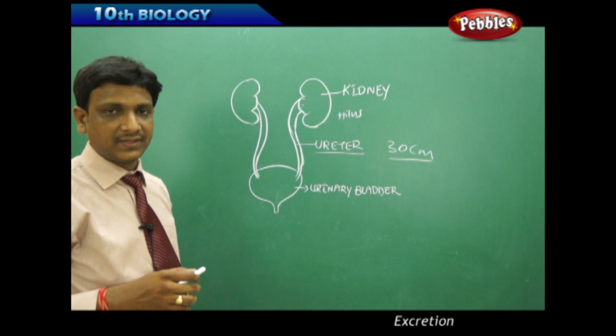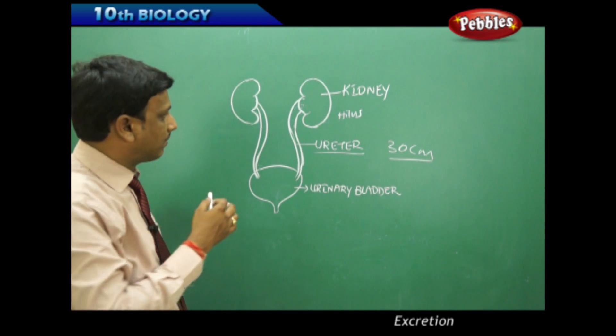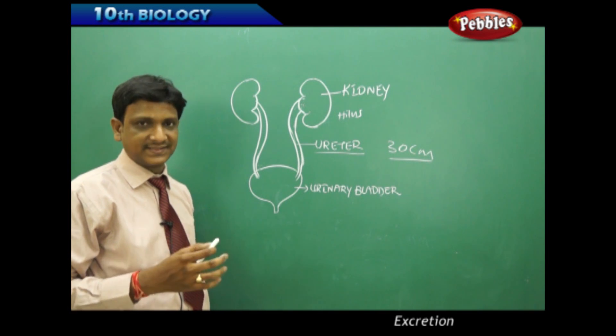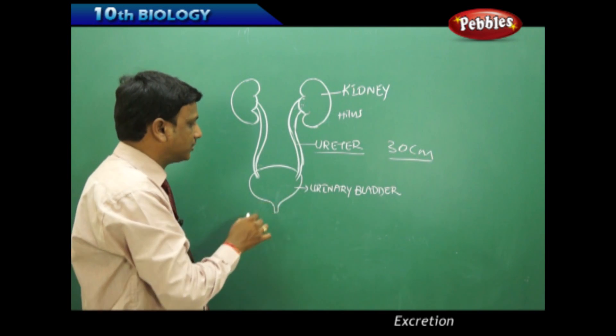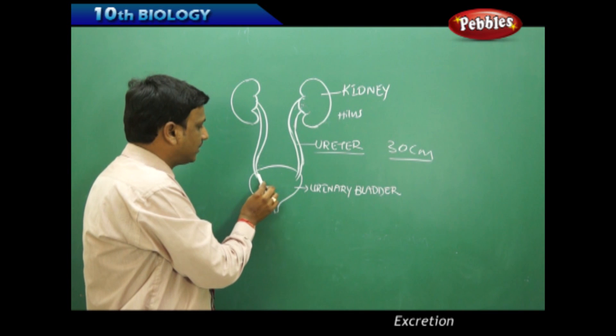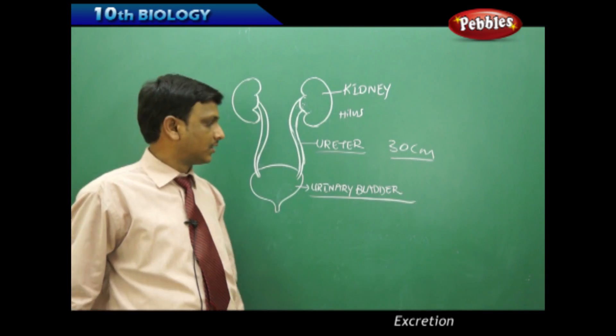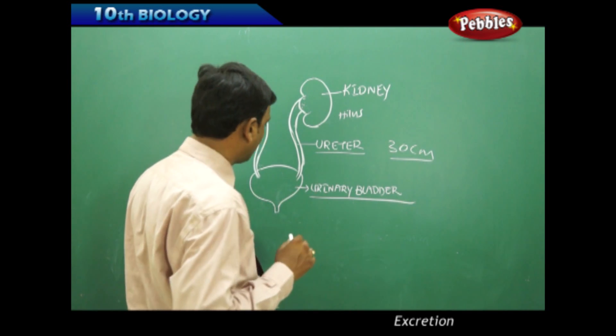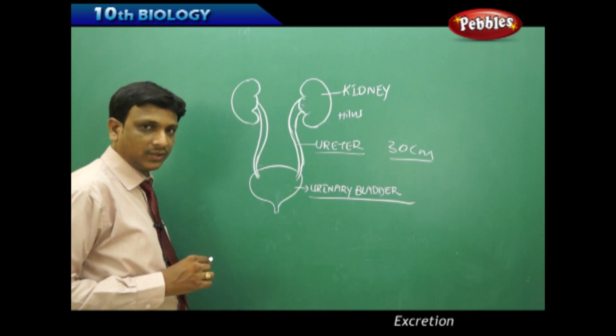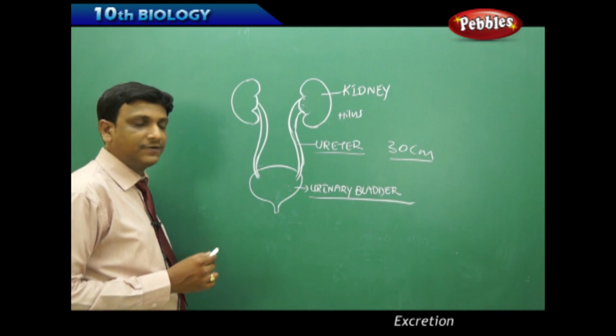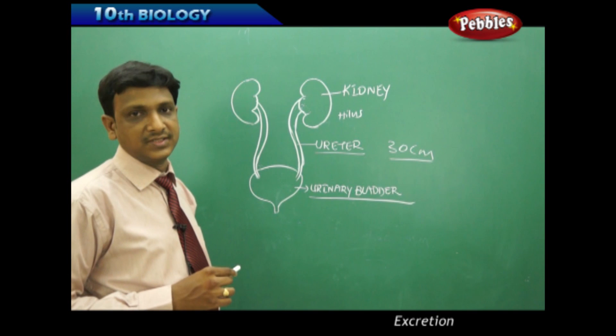The movement of urine takes place by movements called peristalsis. Peristaltic movements let the urine pass down into the urinary bladder. Here the urine is collected. Now let us look at the urinary bladder. This is a pear-shaped organ present in the lower abdomen which holds the urine.